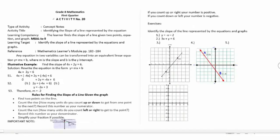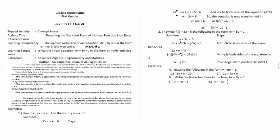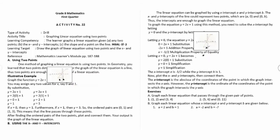Activity number twenty is identifying the slope of a line represented by a graph. Activity number twenty-one is rewriting the standard form of a linear function into slope-intercept form. Activity number twenty-two is graphing linear equations using two points.